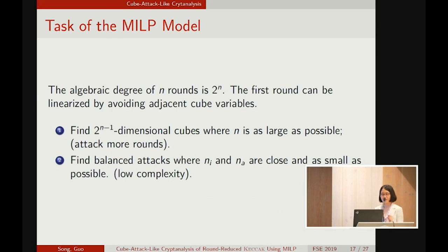Recall that the round function of KECCAK has the algebraic degree 2 and the nonlinear terms comes from the product of adjacent bits. So if we avoid the adjacent cube variables, the first round will be linearized. So after n rounds, the algebraic degree will be 2^(n-1). So with the first round being linearized, the task of the MILP model becomes clear. That is, to find 2^(n-1) dimensional cubes where n is as large as possible to attack more rounds. And find balanced attacks where the nI and nA are close and as small as possible.